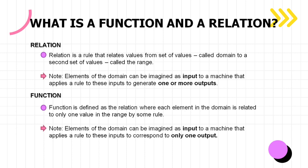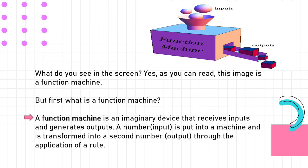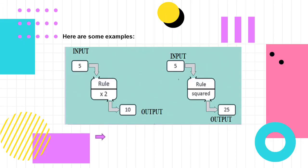Is it confusing? Don't worry. As you go along, you are going to understand the concept of functions and relations. What do you see on the screen? This image is a function machine. A function machine is an imaginary device that receives inputs and generates outputs. A number or input is put into a machine and is transformed into a second number, the output, through the application of a rule.